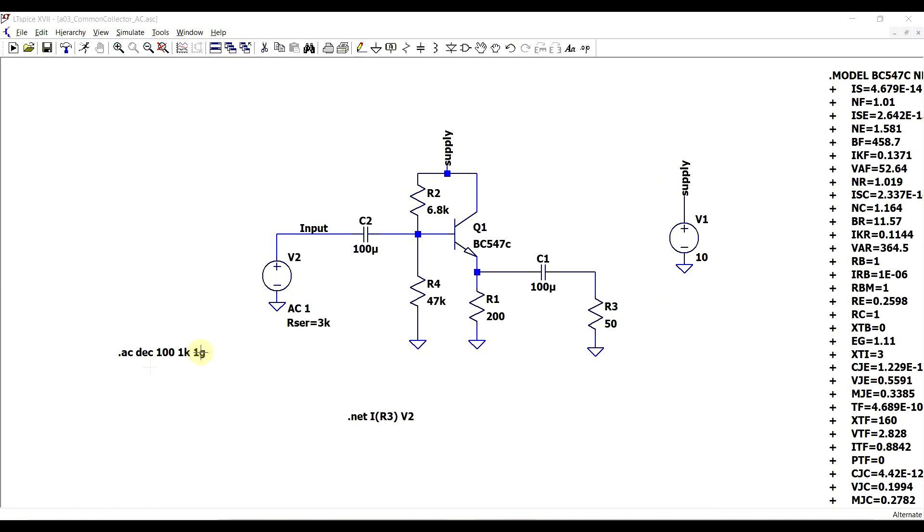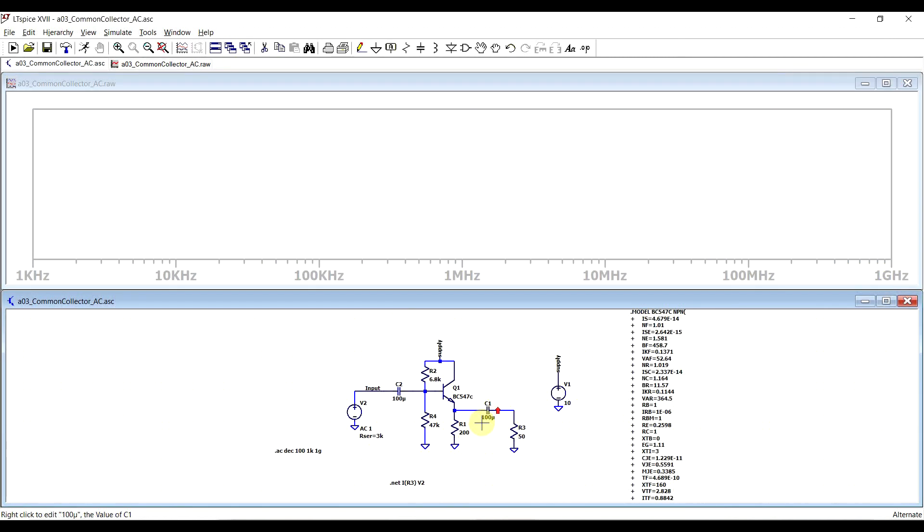For this, I kept the AC type of simulation with the same frequency range, and I inserted a .NET statement to provide the network parameters, considering the output is going through R3 and the input signal source is V2. If we now run the simulation, we can look at the input and output impedance.